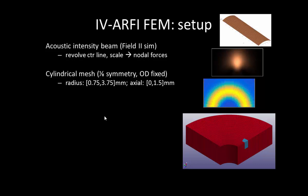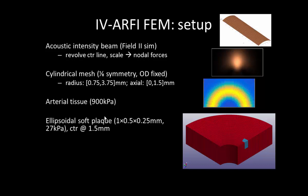The three symmetry boundary surfaces were applied to reduce computational overhead. We enforced arterial tissue properties on the red region — the bulk of the model — and created an ellipsoidal region in blue representing a soft plaque, centered at a range of 1.5 millimeters. Using this mesh setup and the pushing beam profile as input, we solved using the LS-DYNA explicit time-domain solver to compute the resulting displacements. The goal is that the displacements we generate would eventually be tracked with an array similar to the Volcano.